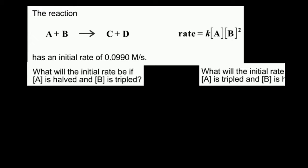So this is what we're going to do in this video. I'm going to show you a very analytical way to determine what happens to the initial rate if we change the concentration of either reactant in this rate law: rate is equal to k, the rate constant, times A to the first, times B to the second. I'm going to show you the analytical way first, but after that I'll show you the quick way, so depending on what your professor wants, you'll see either way.